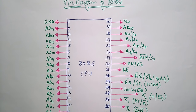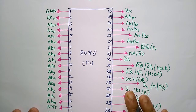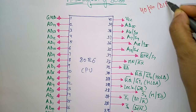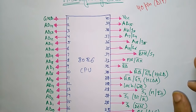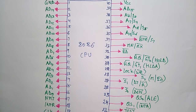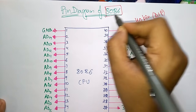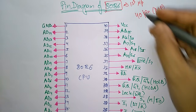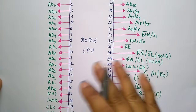The 8086 processor is a 40-pin DIP — DIP means Dual In-line Package. It was the first 16-bit microprocessor available in a 40-pin DIP. You have to note that the 8086 is the first microprocessor available in a 40-pin DIP.